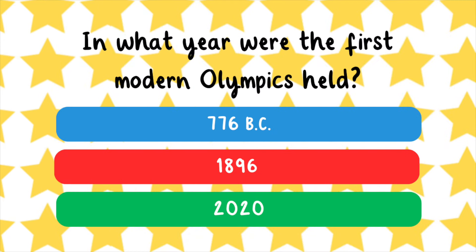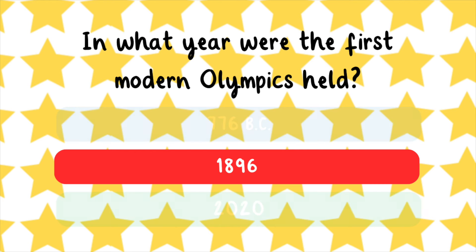In what year were the first modern Olympics held? 776 BC, 1896, or 2020? The first modern Olympics were held in AD 1896.